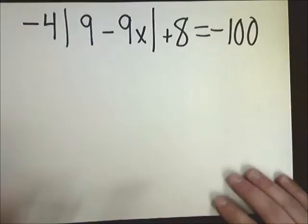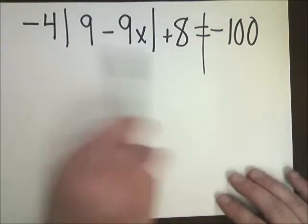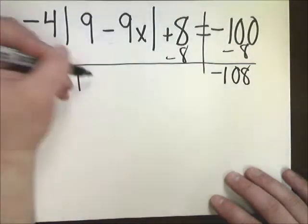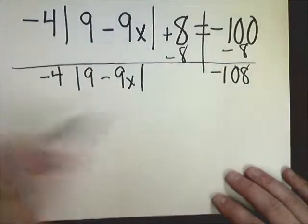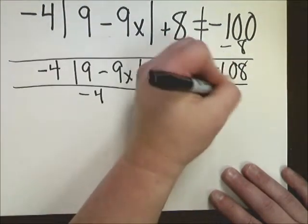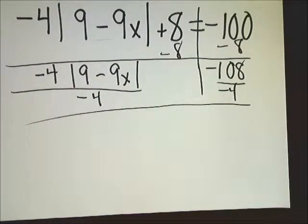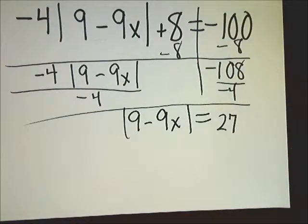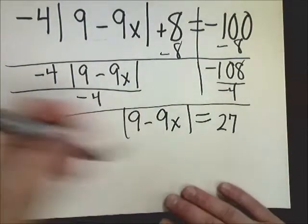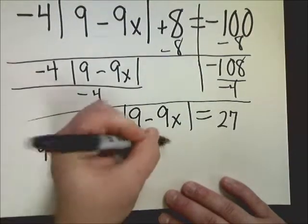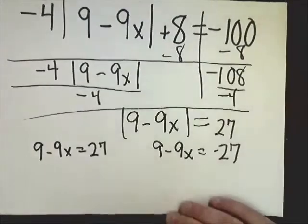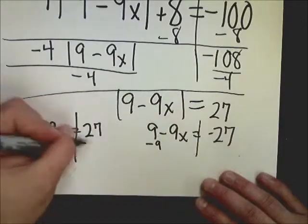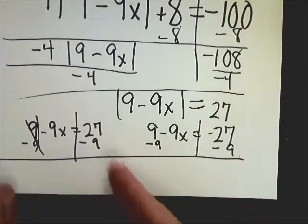And I'm going to solve this one all the way to the end. Draw your line. Here's my absolute value, so we're going to treat it like a variable. So to get rid of plus 8, I need to subtract 8. I end up with negative 108. Bring down negative 4 times the absolute value of 9 minus 9x. To get rid of times negative 4, I'm going to divide by negative 4. Negative 108 divided by negative 4 is 27. Bring down that absolute value. So from here, I'm just going to do the split again.